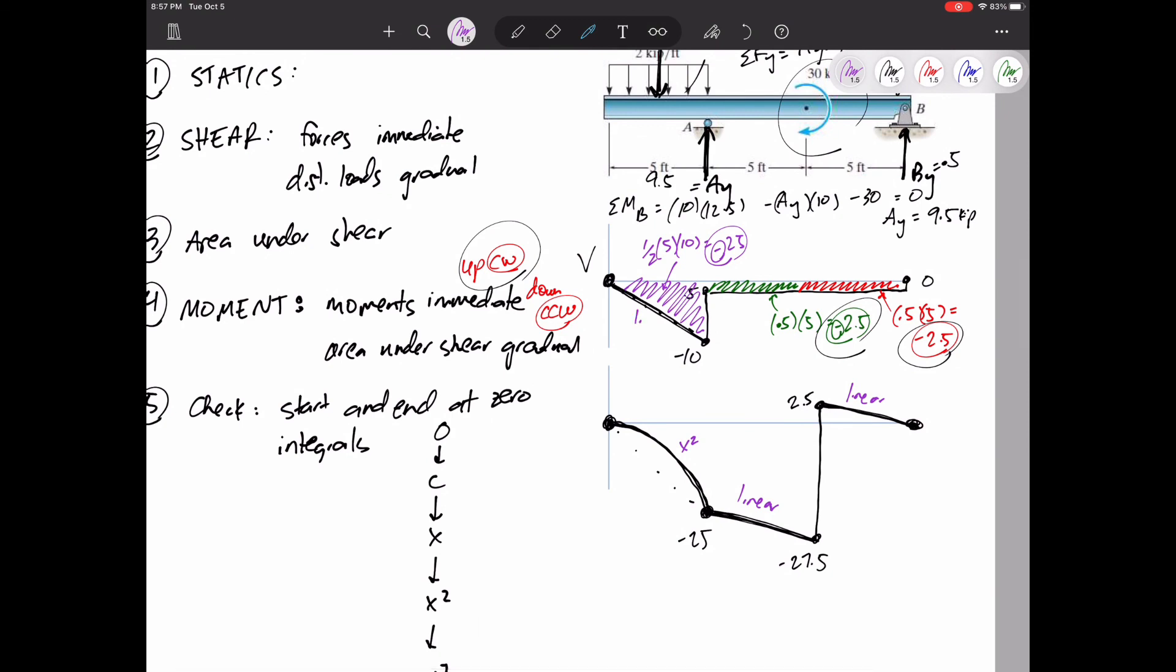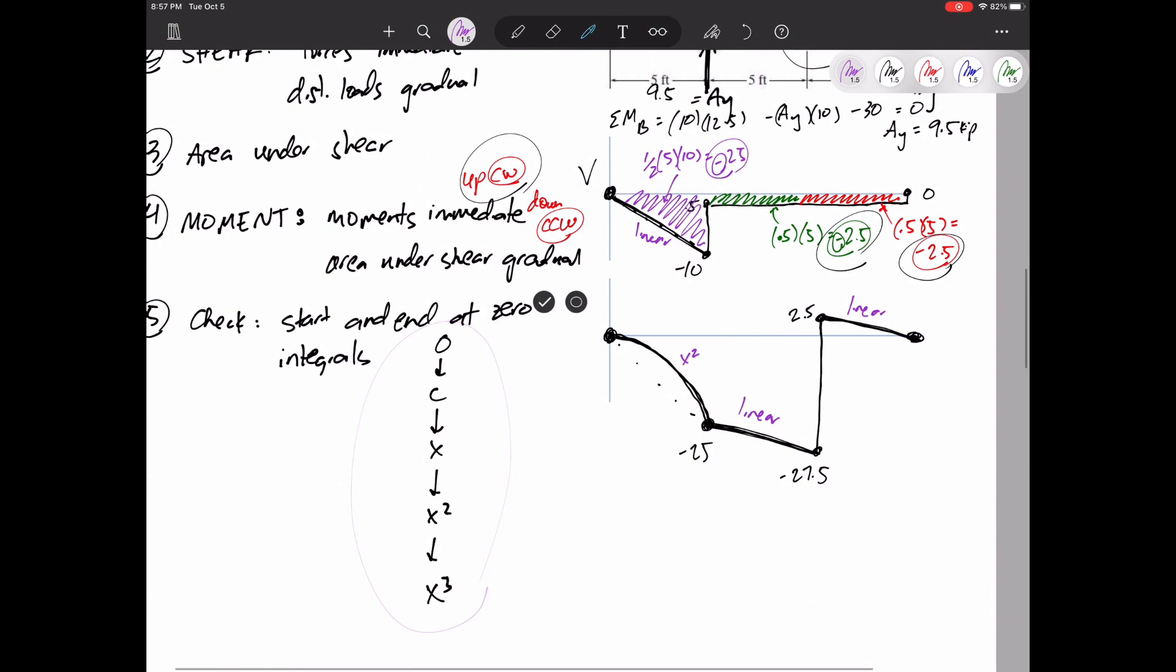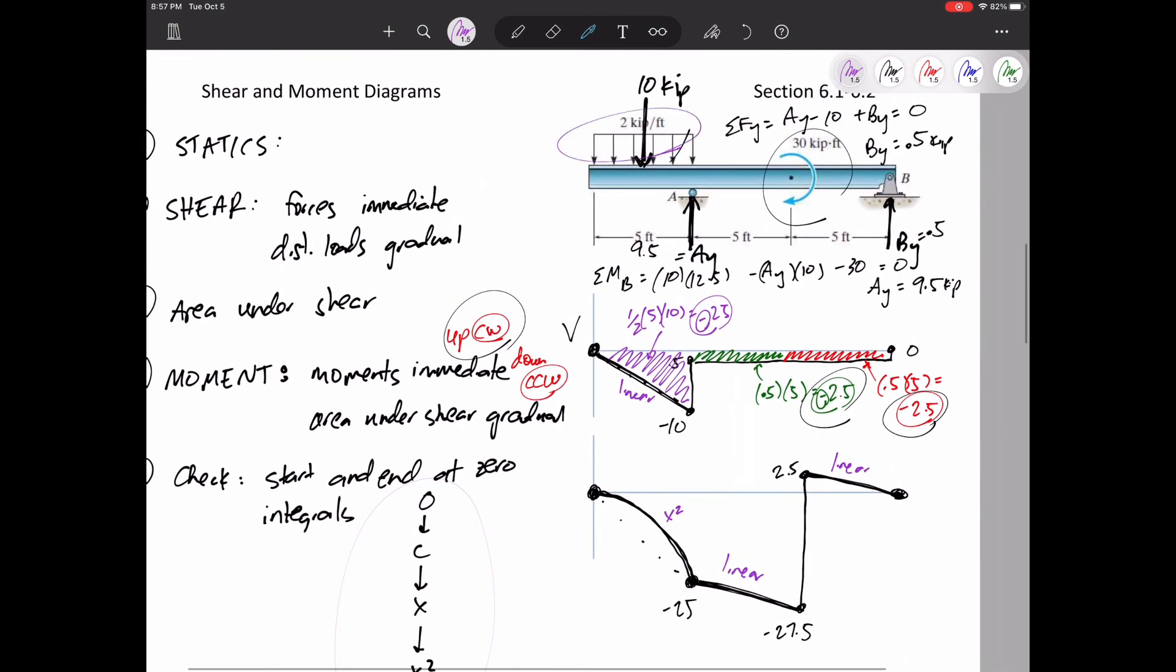This part is more like an X squared. And then just double check. Does it go from zero to constant to X to X squared? Yeah. That distributed load started out as a constant. Then the V would be an X. Then the moment would be an X squared. The other ones start out with zero. The V is constant. And the moment is a linear X.